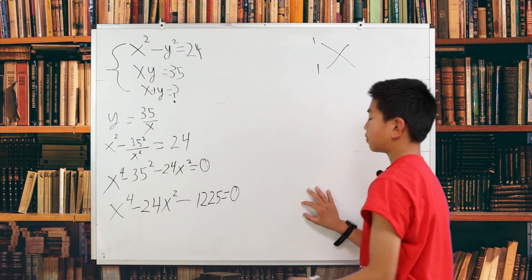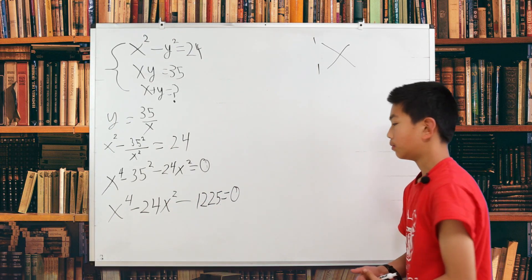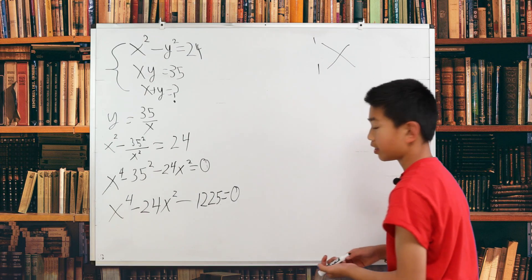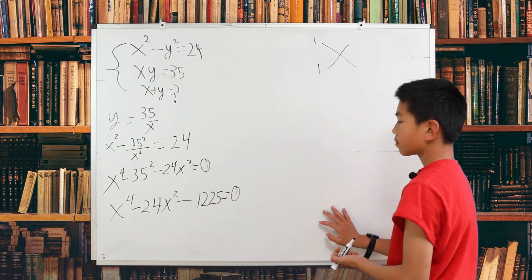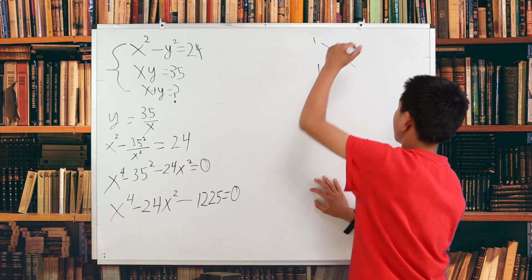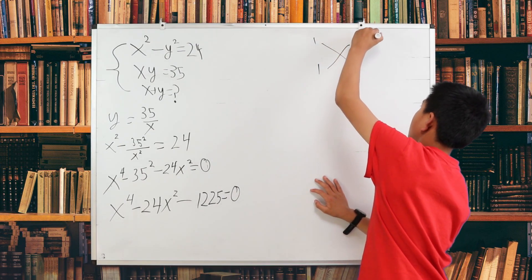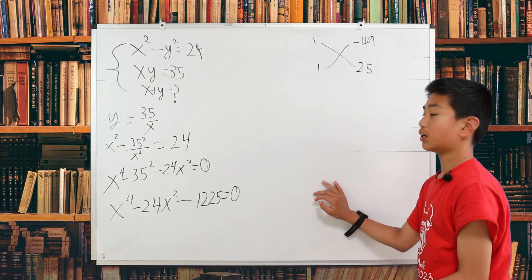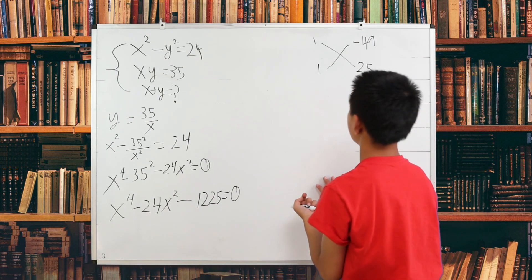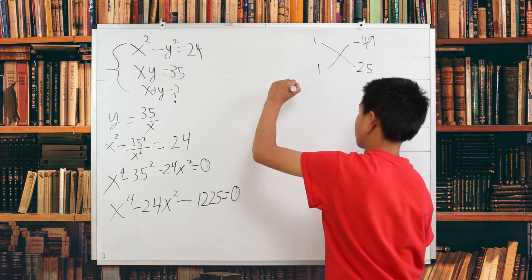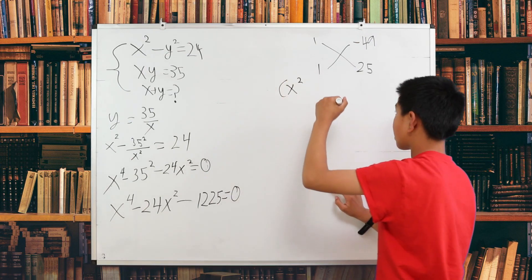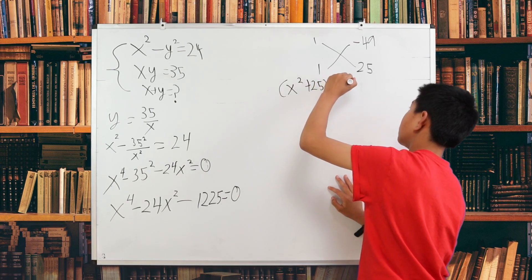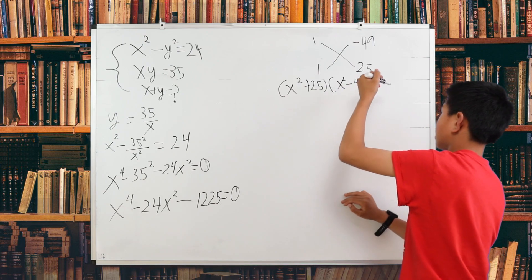There are two ones from the x to the fourth power. So from the 1,225, after some extent, we find that to get negative 24, our numbers are negative 49 and positive 25. Now that we've figured those numbers out, we can bring those numbers into a new equation. So x squared plus 25 times x squared minus 49 is equal to zero.